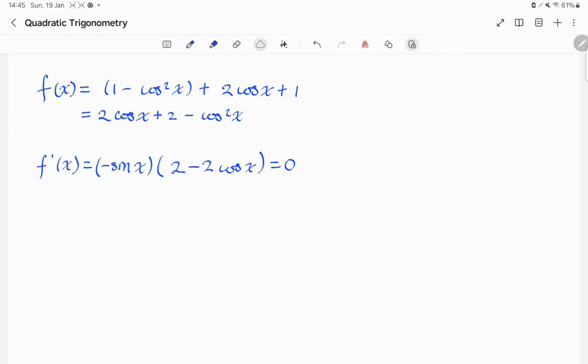I'll now differentiate this using the chain rule to obtain f primed of x is equal to negative sine x, multiplied by 2 minus 2 cosine x, which is equal to 0, if we want to find our stationary points.